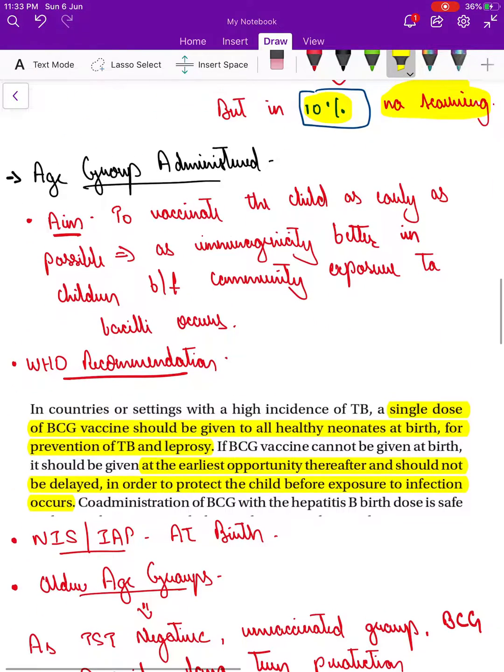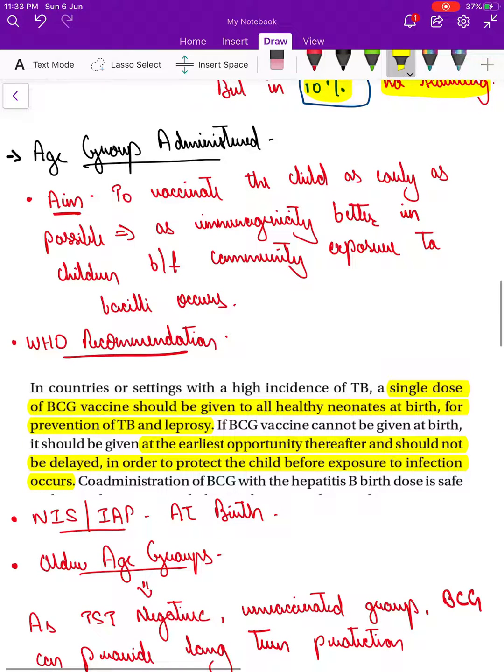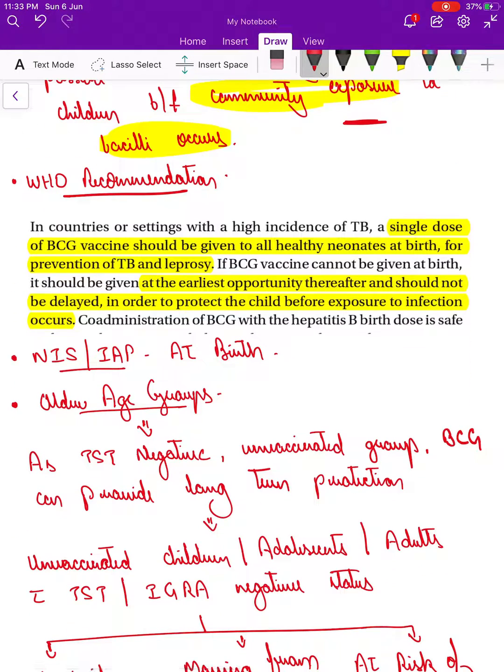What is the age group for administration? The basic aim is to vaccinate the child as early as possible because the efficacy of the vaccine is much better when given before community exposure of the child to the TB bacillus. In a country like India, where most people are infected with TB bacillus though not having active disease, it's only possible to do this at birth. WHO recommends a single dose of BCG vaccine to be given to all healthy neonates at birth for prevention of TB as well as leprosy.